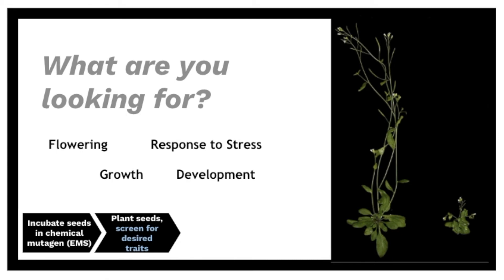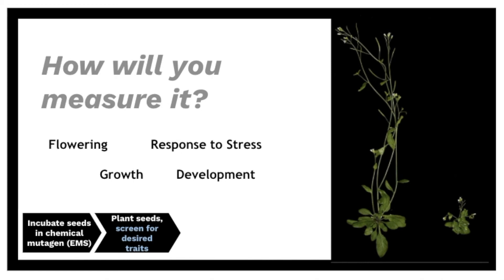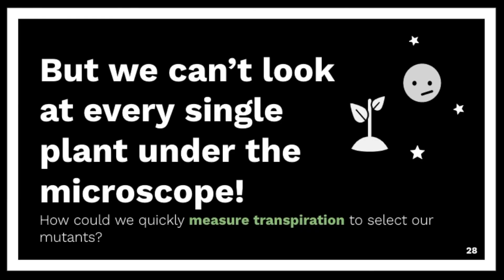All of these would be caused by alterations to the amino acids. Some of the phenotypes are really obvious, and we could pull those plants right away. Others would need more genetic crosses or a different type of measurement. So think about how you would measure if you're looking for a specific phenotype — we can't look at all the plant cells under a microscope. So if we're looking to measure something like transpiration to select for our mutants, think about ways we could measure this.